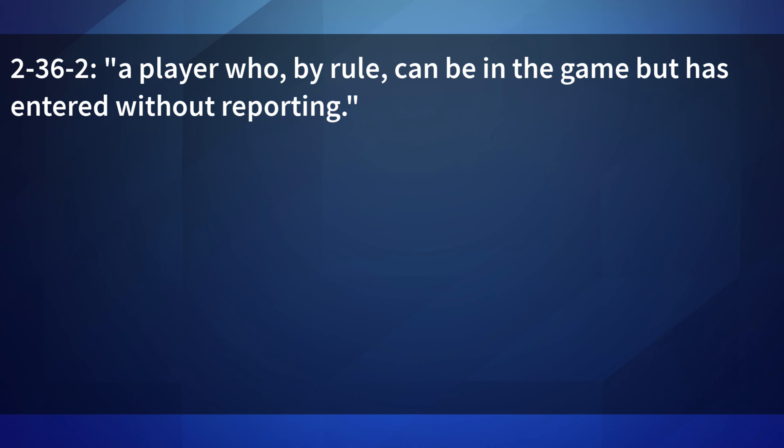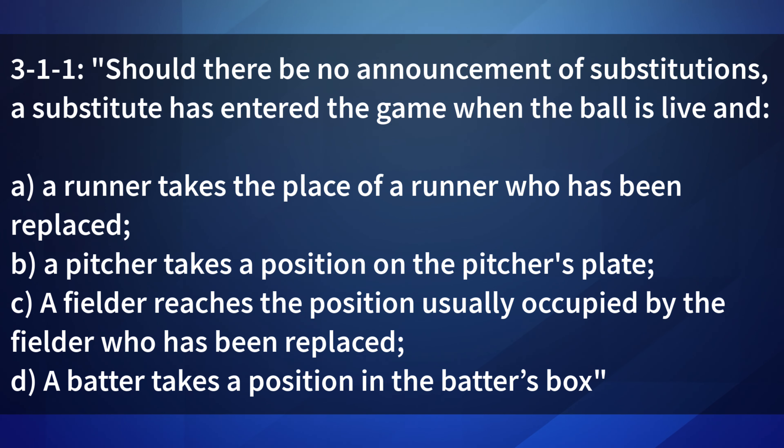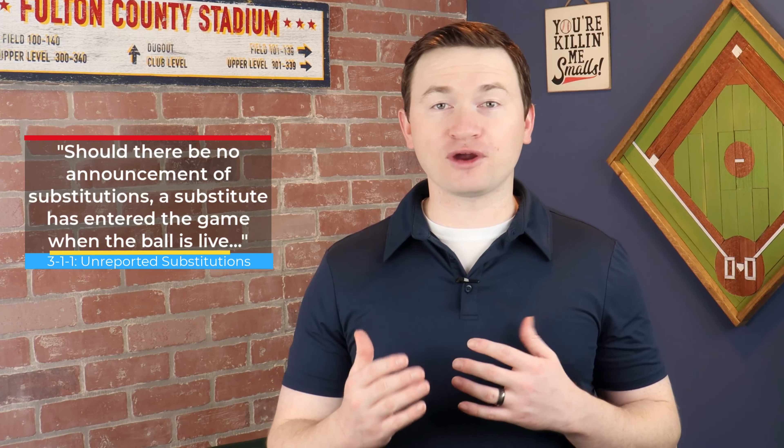What is much more common to occur is an unannounced substitution. These are defined in 2-36-2 as a player who, by rule, can be in the game but has entered without reporting. Usually the coach or player will tell you when a substitution is occurring, but just because a substitution is unannounced does not make it illegal. Rule 3-1-1 clarifies by saying should there be no announcement of a substitution, a substitute has entered the game when the ball is live and a runner takes the place of a runner who has been replaced, a pitcher takes a position on the pitcher's plate, a fielder reaches the position usually occupied by the fielder who has been replaced, or a batter takes a position in the batter's box. The NFHS rules specifically say an unannounced substitution occurs only when the ball is put into play, so it cannot occur during a dead ball period, such as between innings.